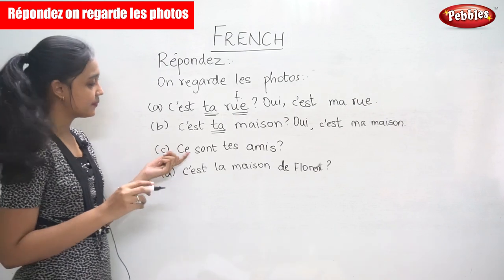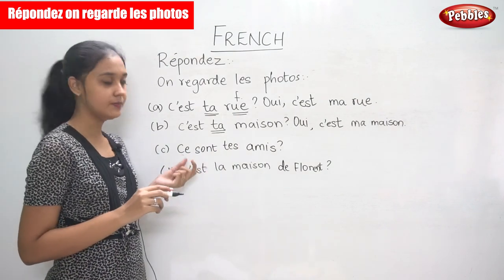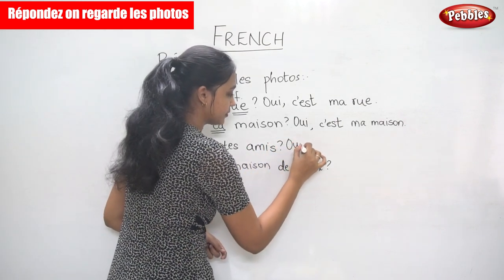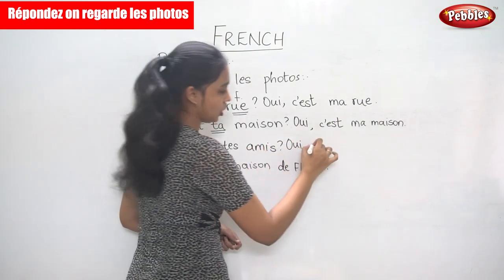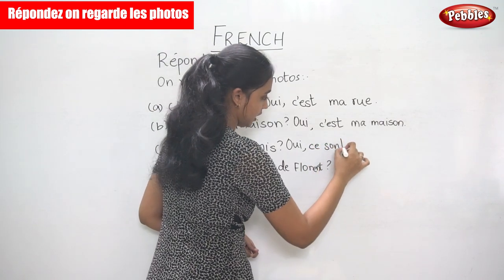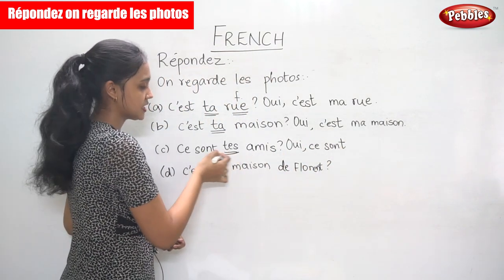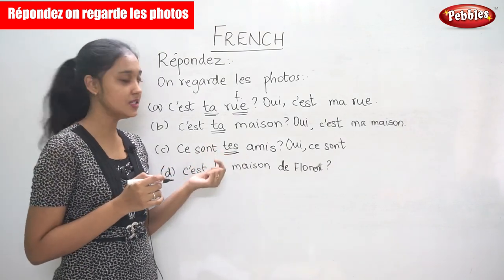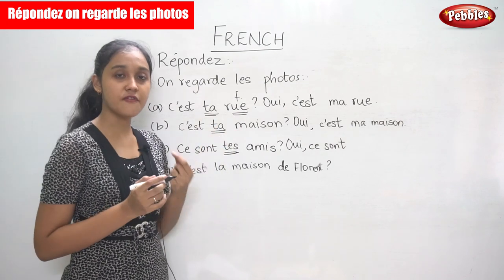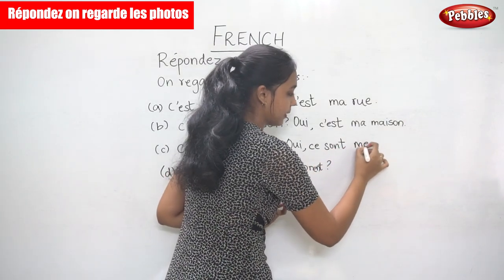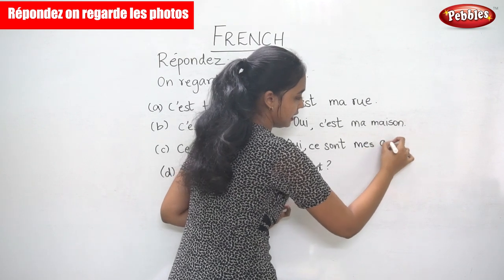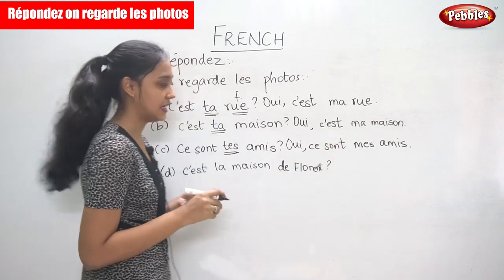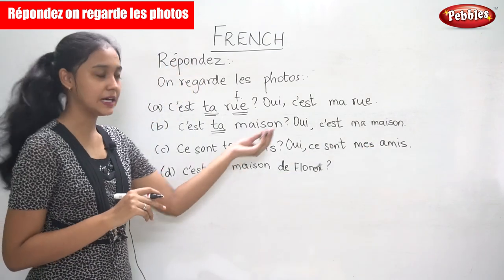The next sentence: 'Tes amis' — these are your friends. The possessive here is 'tes,' which is second person. When we change it to the first person, it becomes 'mes.' So the answer is: 'Oui, ce sont mes amis.' Yes, these are my friends.